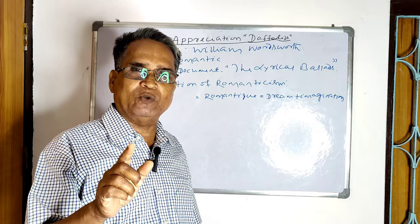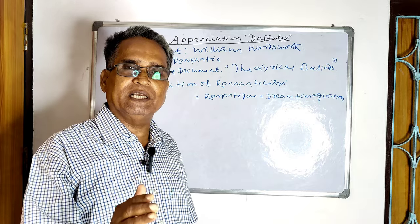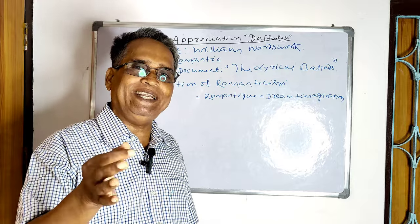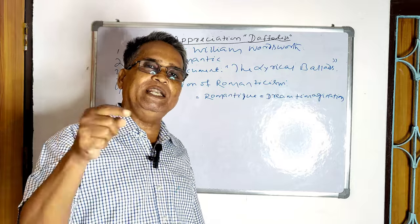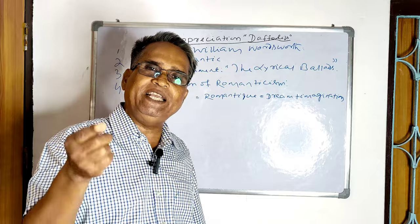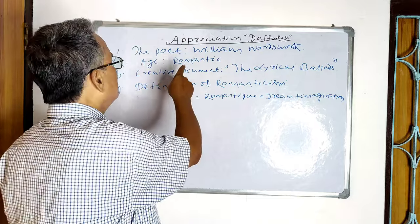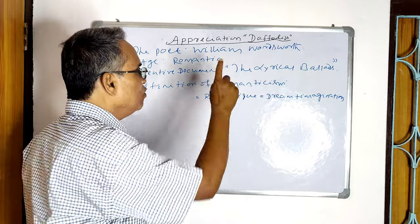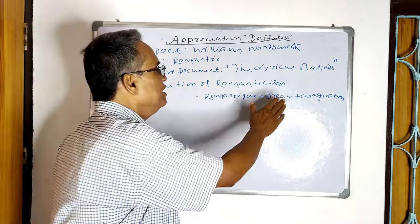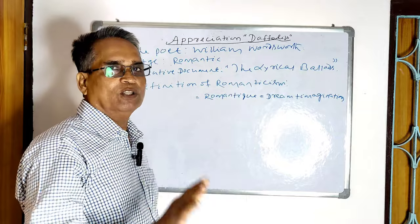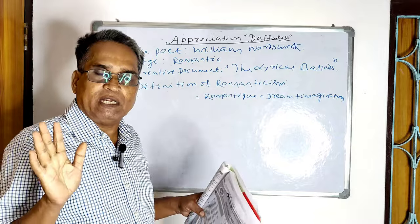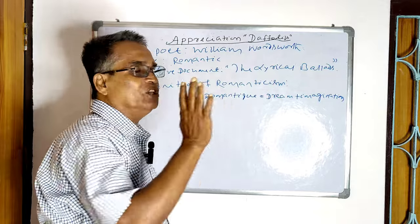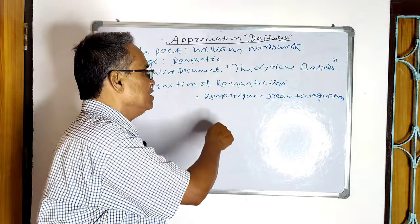Let us try to understand what romanticism means. Romantic is a word originally derived from the Latin word Romantiqui, meaning dream plus imagination. A poem that deals with dream and imagination is called a romantic poem, and its author a romantic poet.